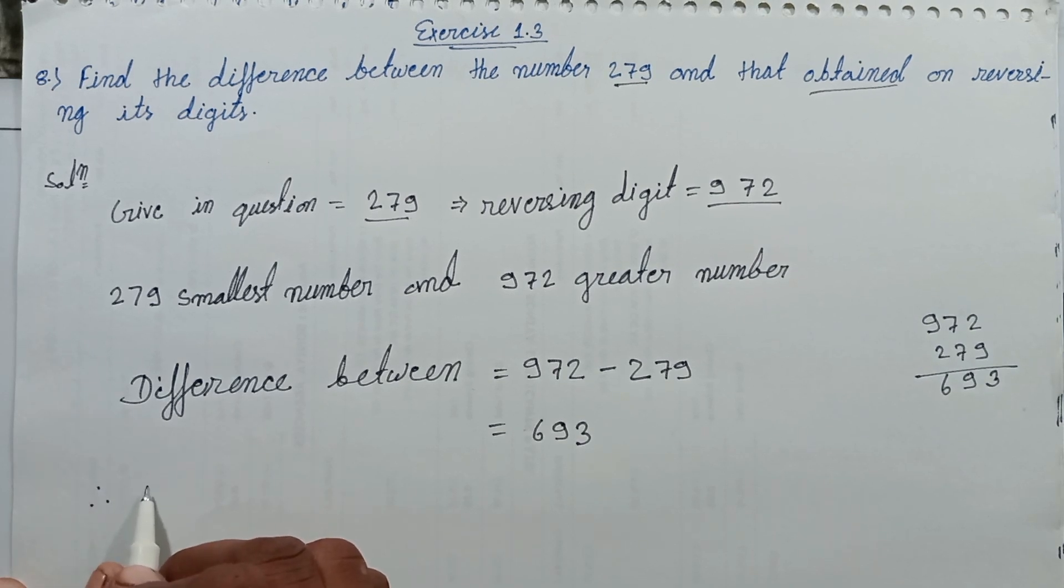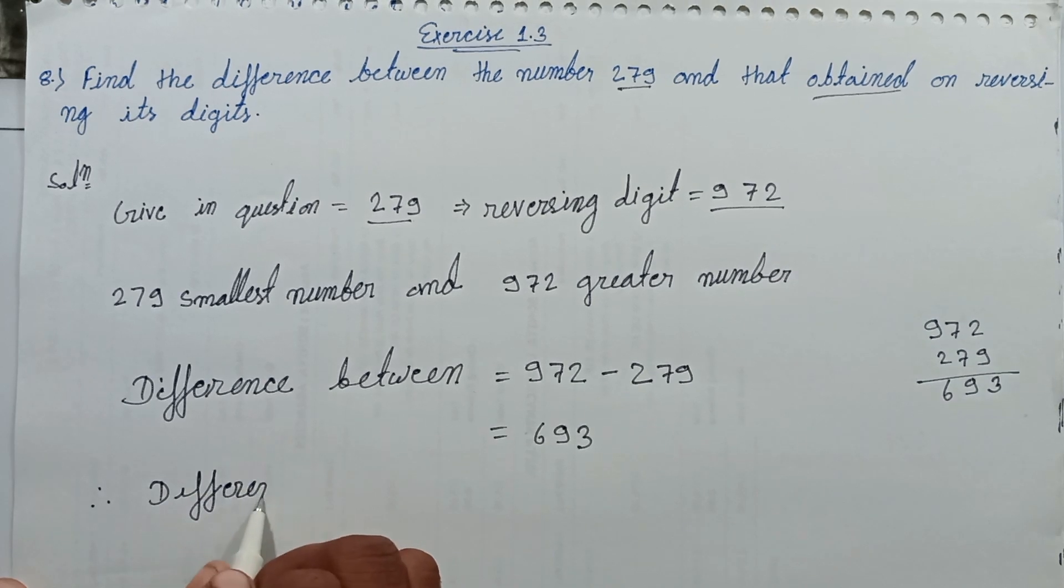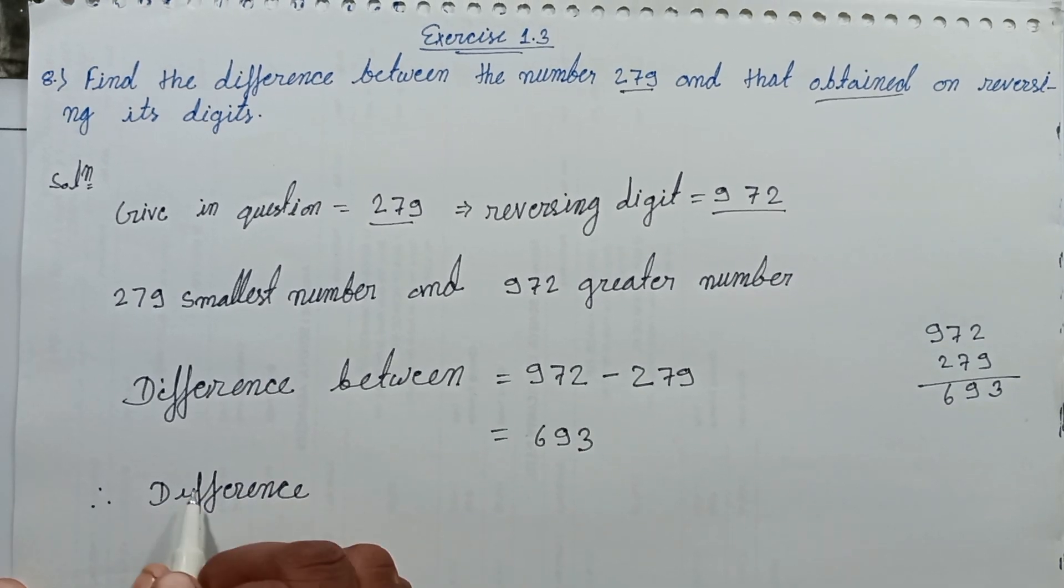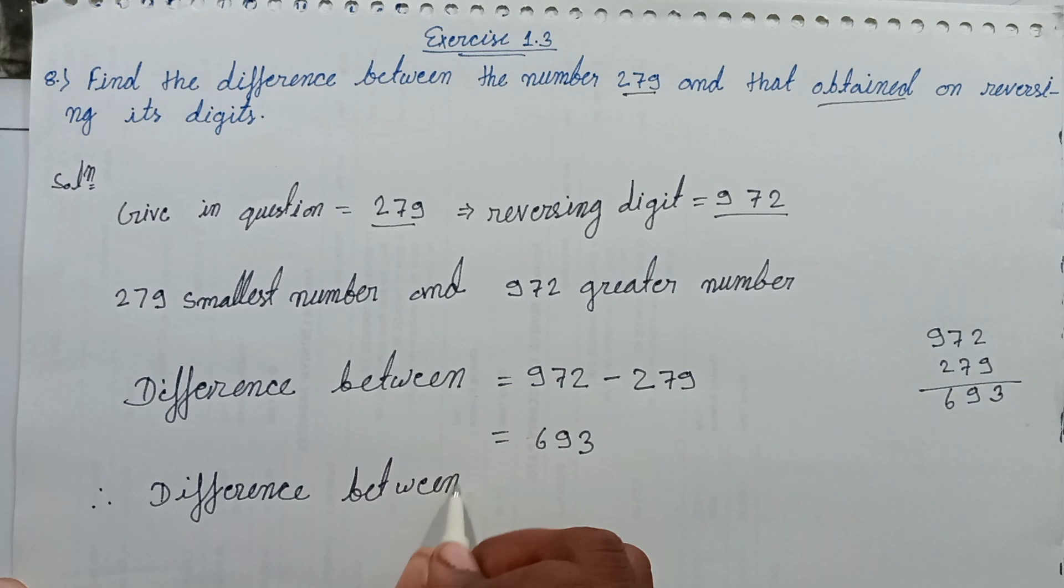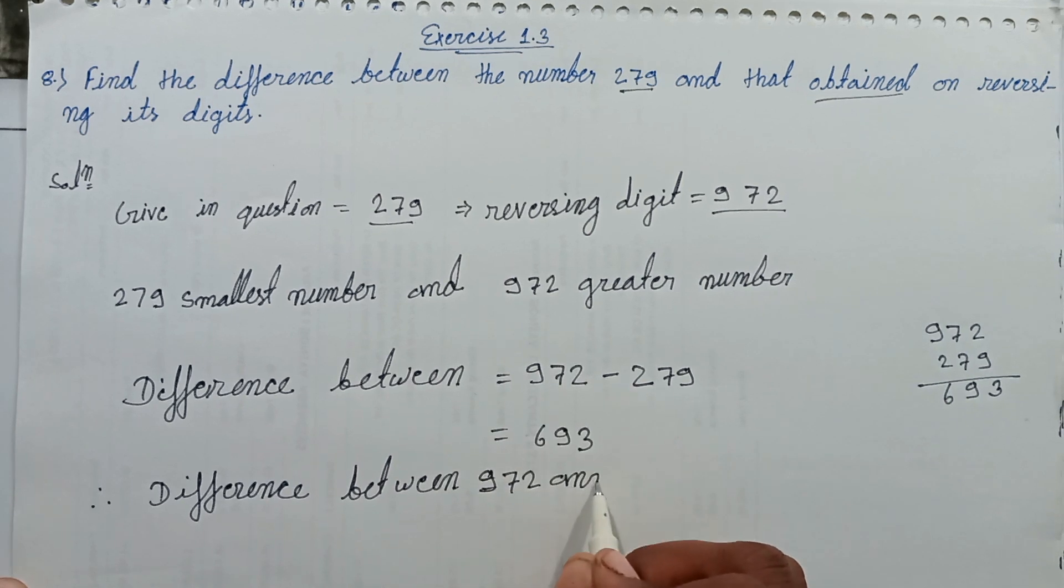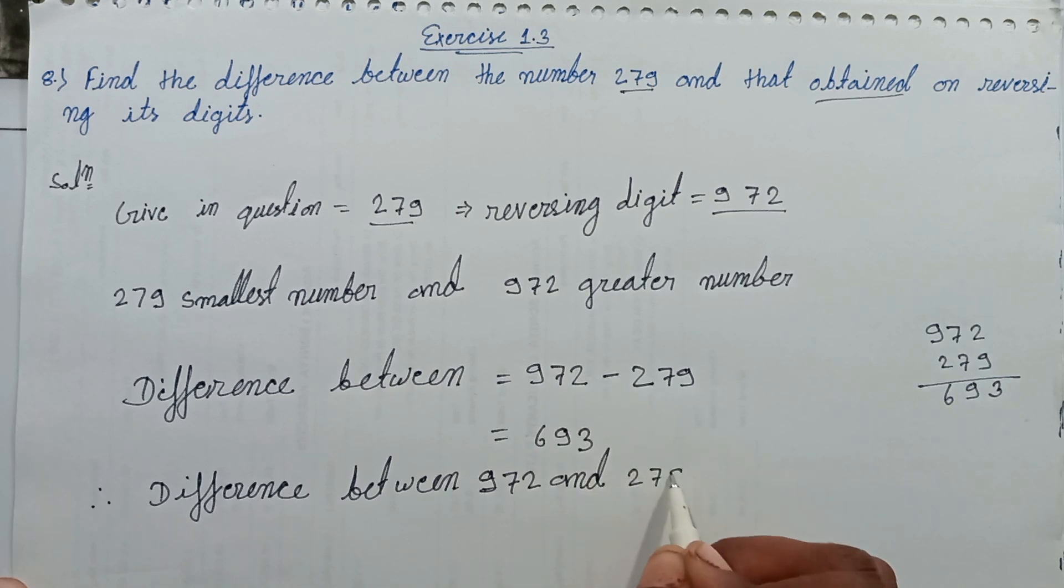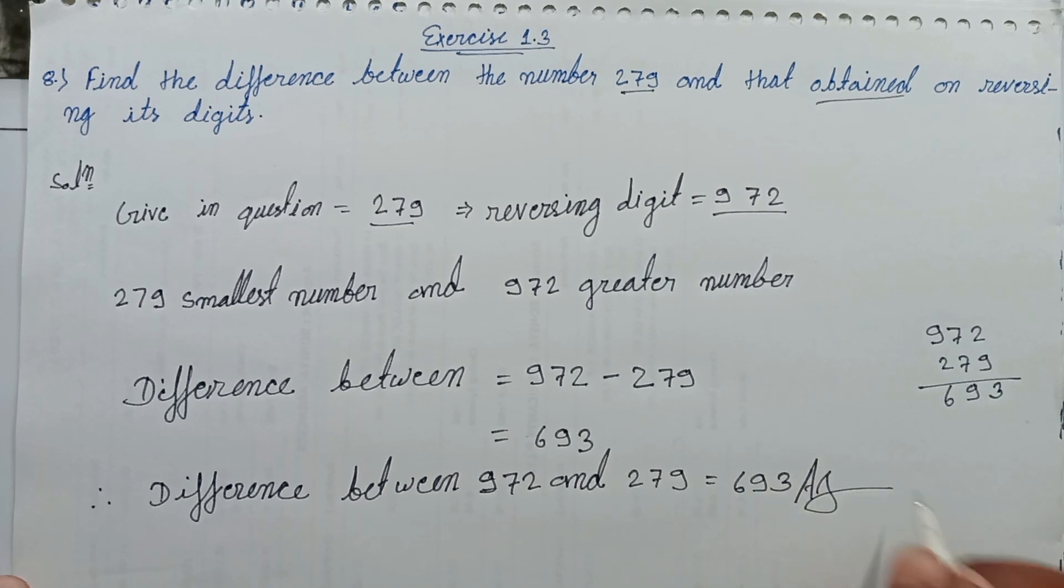Therefore, the difference between 972 and 279 comes out 693. This is my answer.